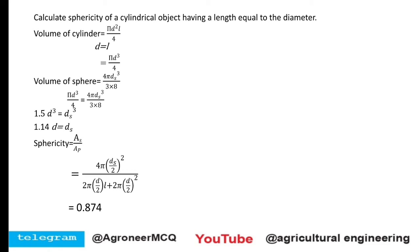Using sphericity = As / Ap: the surface area of the equivalent sphere is 4π r², where r = ds/2. The surface area of the cylinder is 2πrl + 2πr². Substituting ds = 1.14 d gives sphericity = 0.874. Do not miss this question — they will definitely ask you to calculate the sphericity of a cylindrical object with length equal to diameter, and the answer is 0.874.